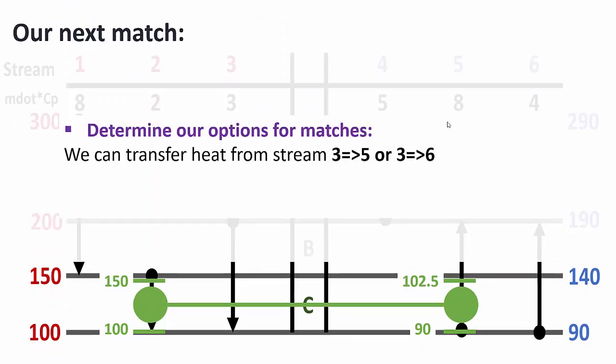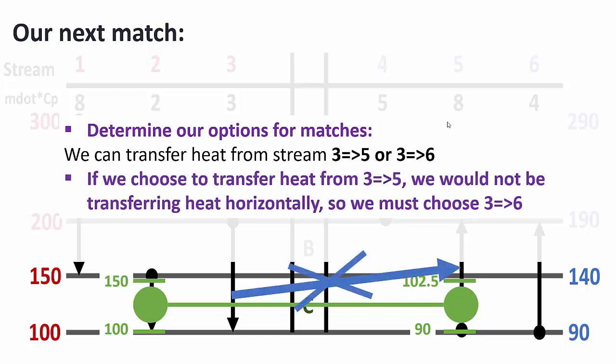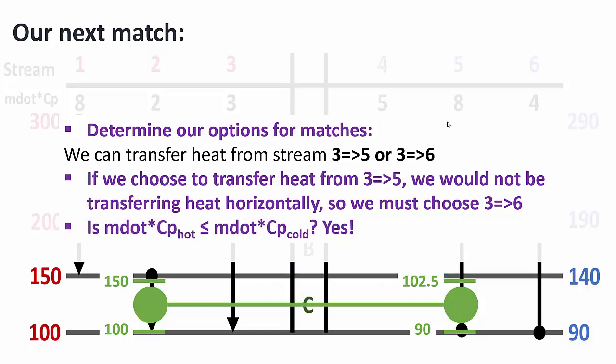We can transfer heat from stream 3 to 5 or from stream 3 to 6. However, if we choose 3 to 5, we would be transferring heat diagonally up, which is not allowed — you cannot use a stream at 100°C to heat a stream already at 102.5°C; that physically does not make sense. So we must choose the match of 3 to 6. Checking: M_dot·Cp hot is 3 and M_dot·Cp cold is 4, so yes, the condition is satisfied.